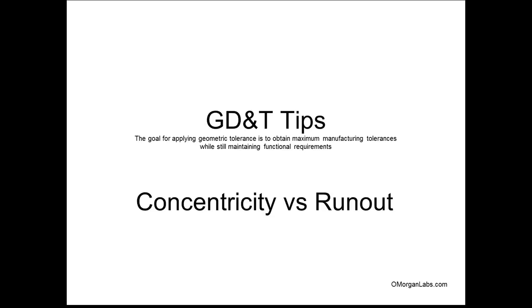This is omorganlabs.com. This is Mr. Morgan. I'm going to talk to you about some GD&T tips — Geometric Dimensioning and Tolerancing. Basically, the goal of GD&T is to obtain maximum manufacturing tolerances while still maintaining functional requirements. So you want to make parts that are good enough for your application but not impossible to make.